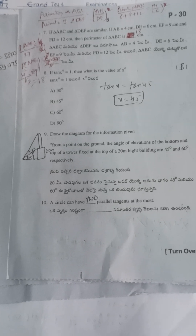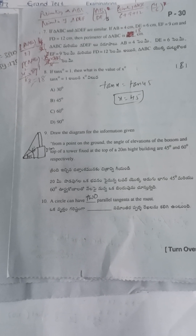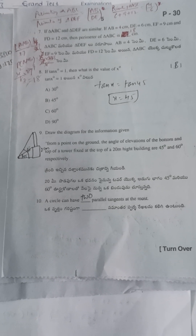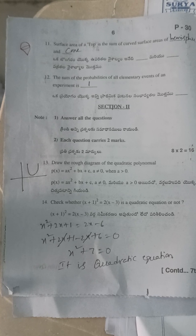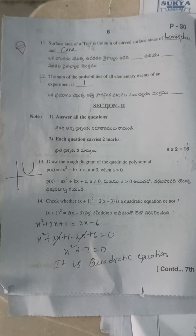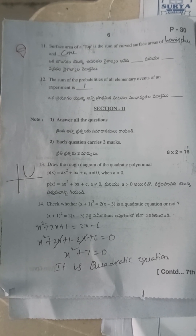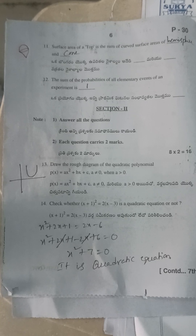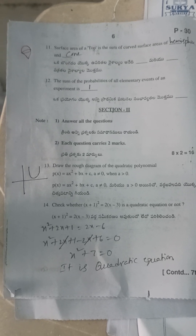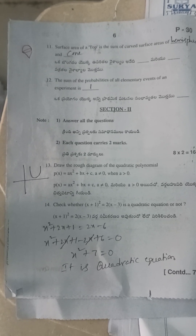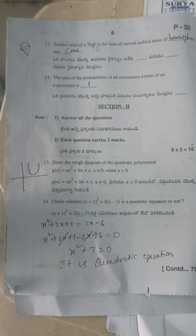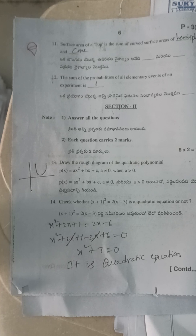Tenth question: a circle can have at most two parallel tangents. The surface area of a top is the sum of the curved surface area of a hemisphere and a cone. The sum of probabilities of all elementary events of an experiment is 1.